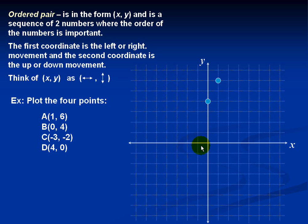To plot our next point C, we see that our X coordinate is negative 3 and our Y coordinate is negative 2. So once again we start at the origin. The X coordinate is negative 3, so we move 3 places to the left. The Y coordinate is negative 2, so we move down 2 places.